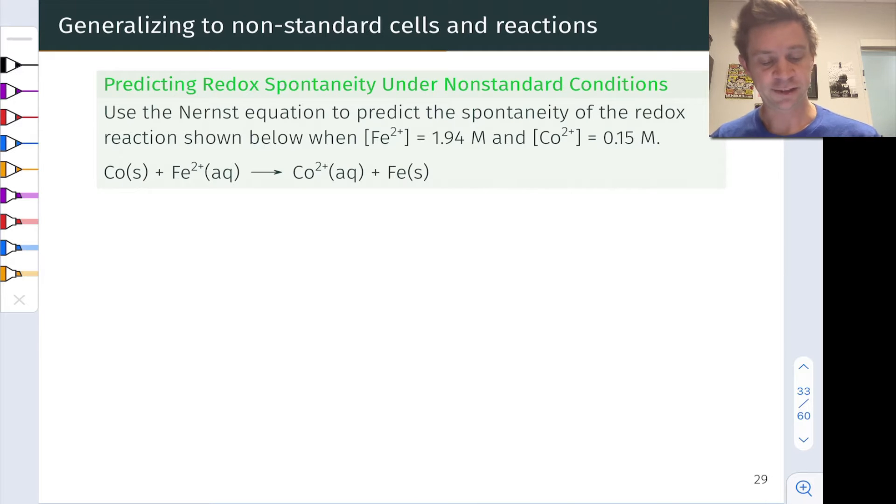The redox reaction is the oxidation of cobalt metal by Fe2+ to form Co2+ and iron metal. Something that's going to be useful for this later is for us to determine the number of electrons transferred per reaction event for this redox reaction, or the number of moles of electrons transferred in a mole of reactions.